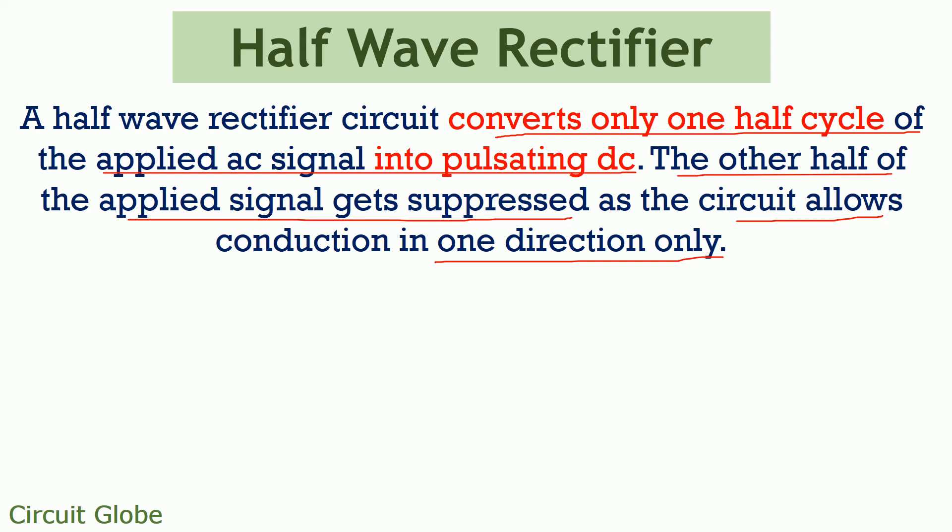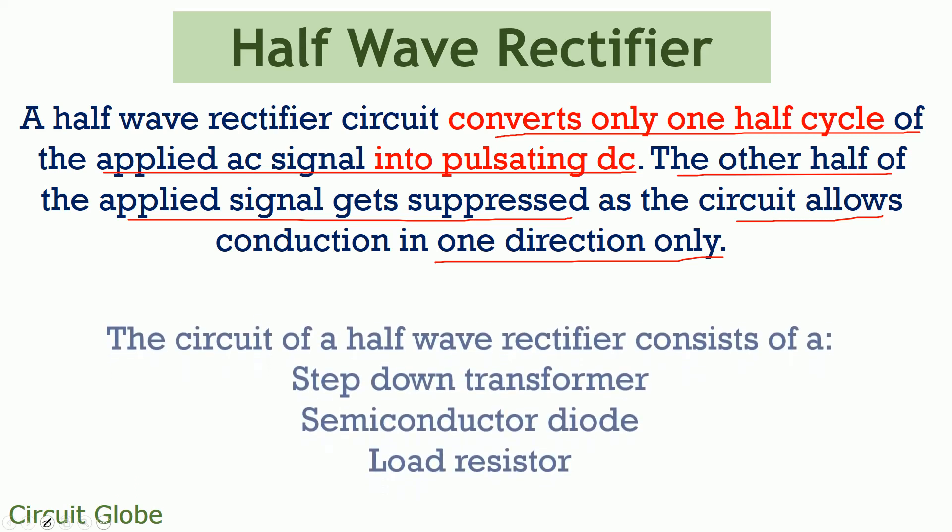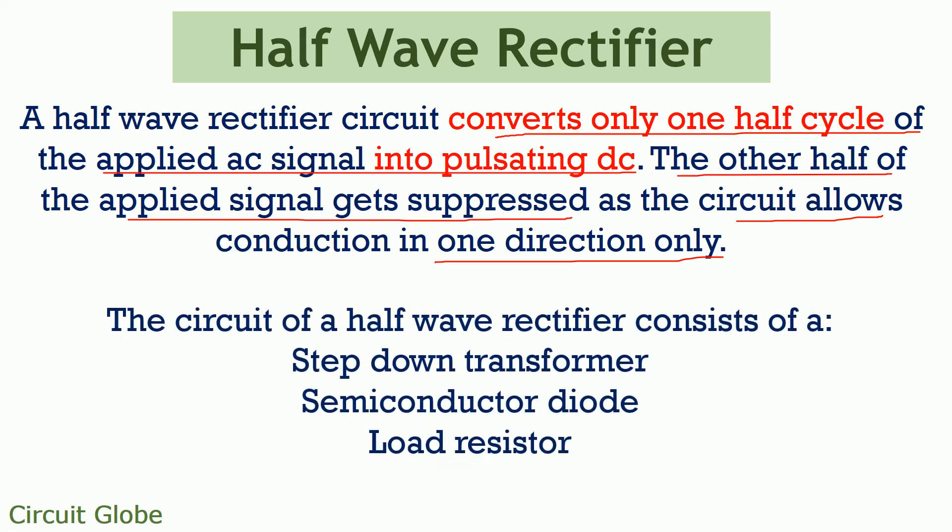Now the question arises, what are the components involved in the circuit of a half wave rectifier that converts only one half cycle of the AC signal into pulsating DC? So these are basically a step down transformer, a semiconductor diode and a load resistor through which the output is achieved.